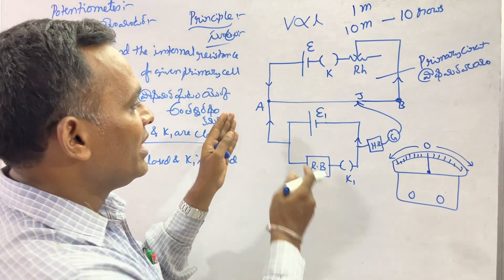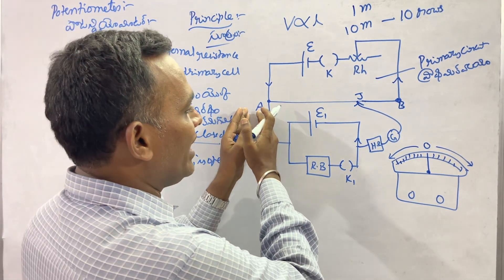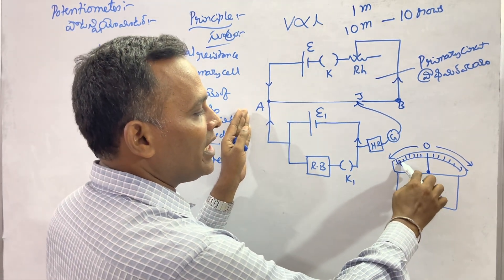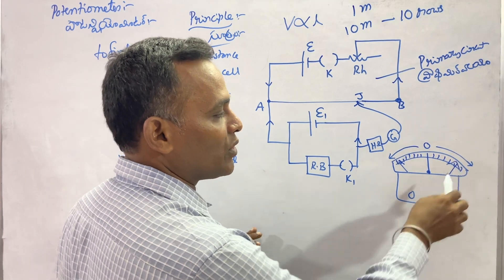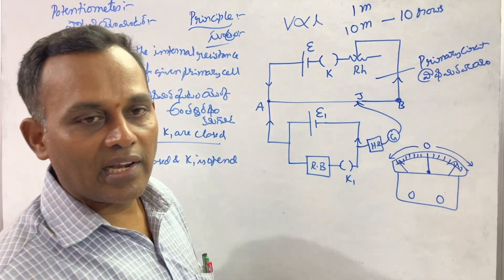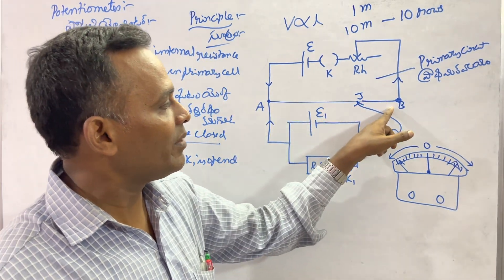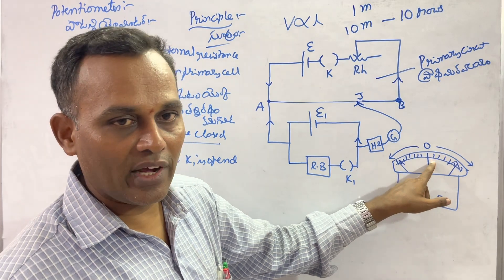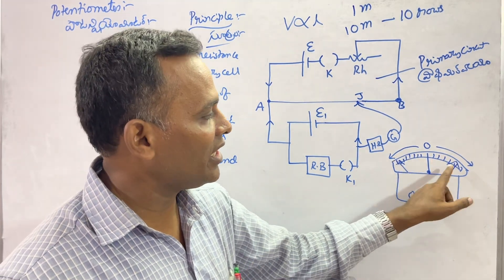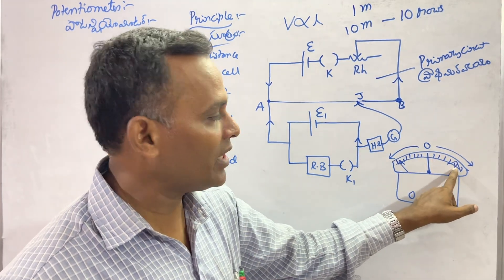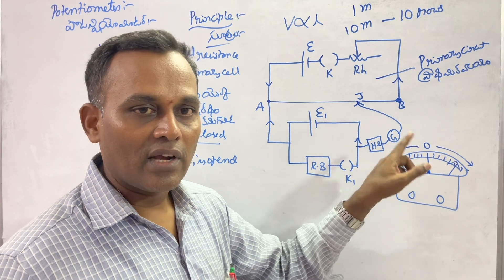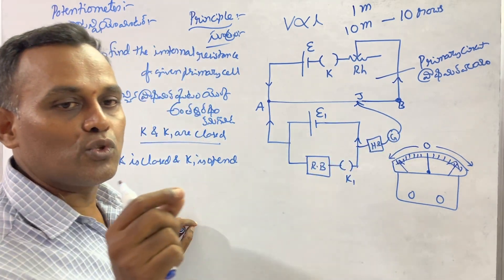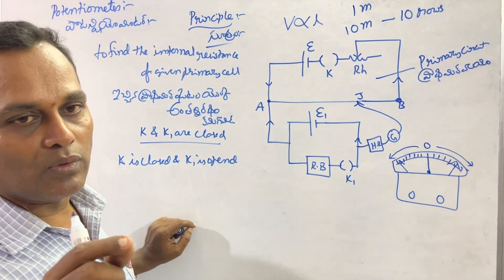The jockey is pressed from A towards B at different points on the wire until we find the null deflection point on the galvanometer.